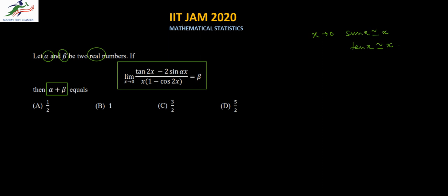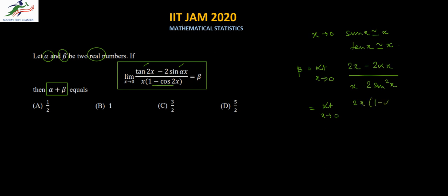Using this, we can write beta equal to limit x tending to 0. In the numerator, tan 2x can be written as 2x, and 2 sin(alpha x) becomes minus 2 alpha x. In the denominator, x remains, and 1 minus cos x can be written as 2 sin² x. This simplifies to limit x tending to 0 of 2x(1 minus alpha) in the numerator over x times 2x², giving (1 minus alpha) over x times the limit x tending to 0.